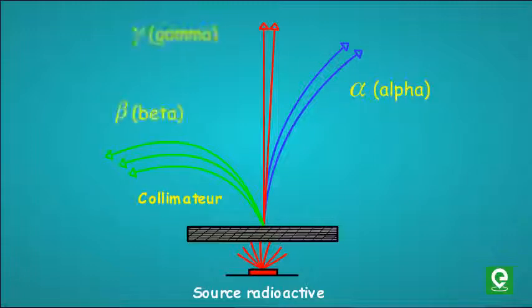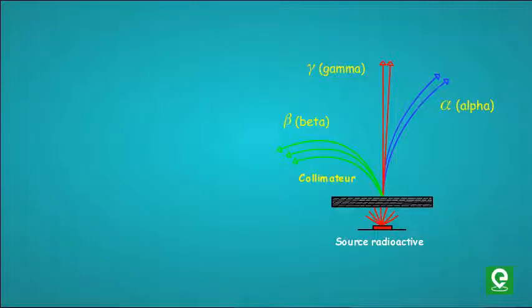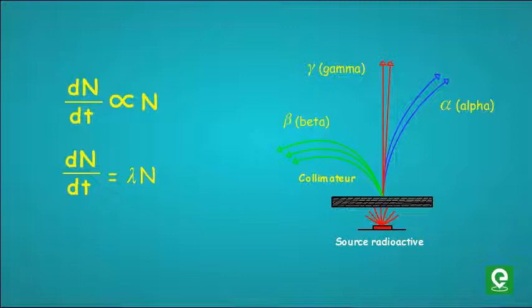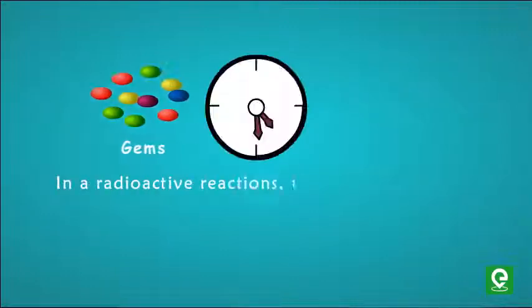Radioactive disintegration follows first order kinetics, which means rate of decrease of radioactive nuclei at any time is directly proportional to the number of radioactive nuclei present at that time. On integrating this, we get the final equation where N₀ is initial number of molecules, N is number of molecules at particular time, and lambda is the decay constant.